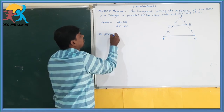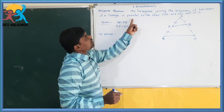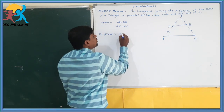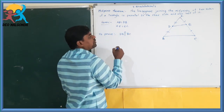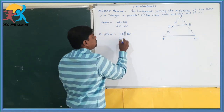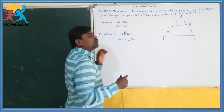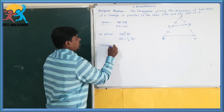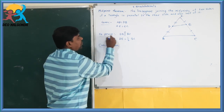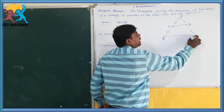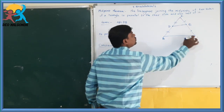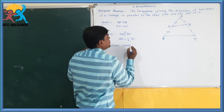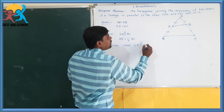What we have to prove? DE is parallel to the third side BC, and DE is half of BC. To prove this, we need some construction. We have to draw a line parallel to AB through C. That line we name as CF — draw CF parallel to AB.